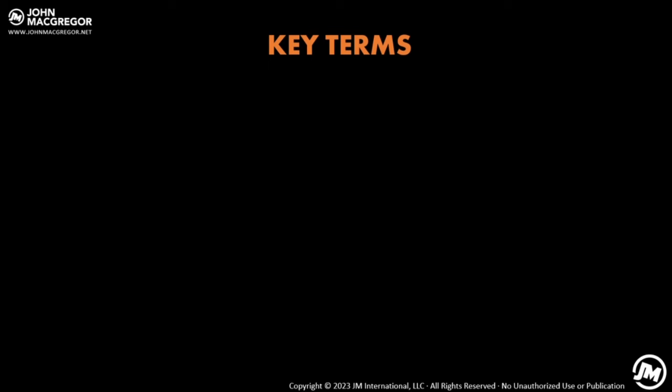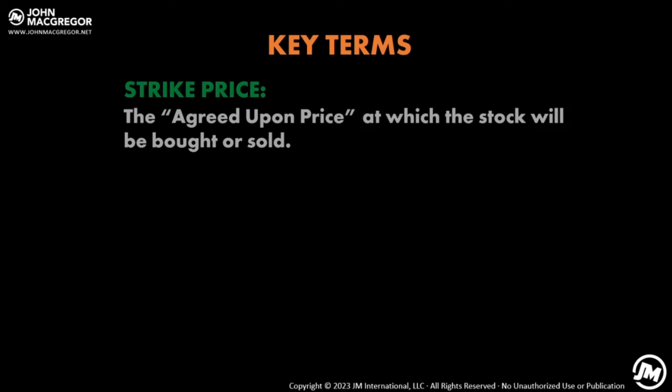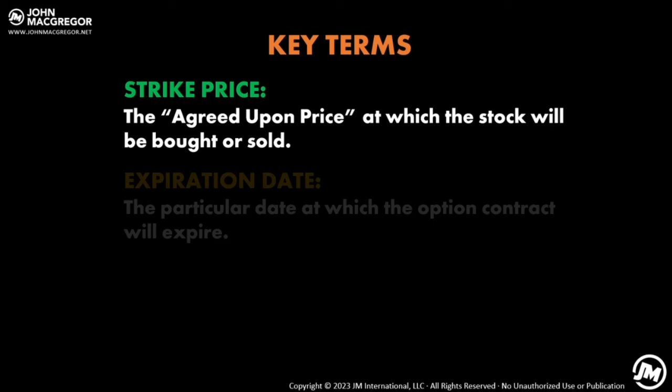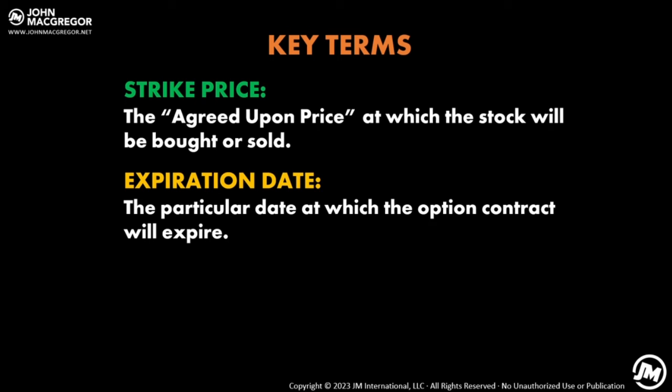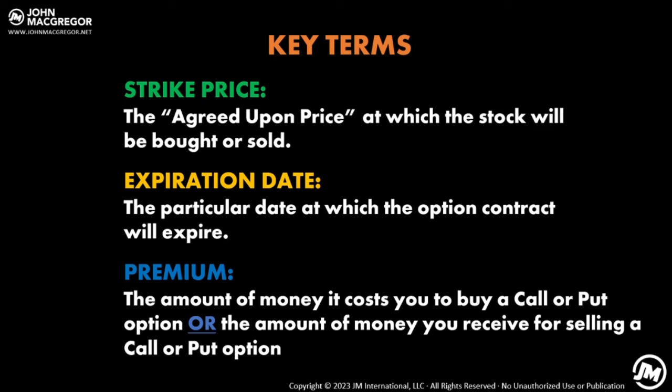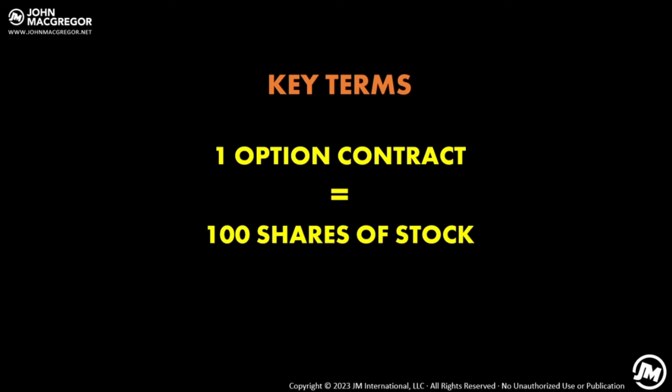The basis of my strategy is simply selling calls on stocks I own and selling puts on stocks I don't own. Let me explain some key terms. The strike price is the agreed-upon price at which the stock will be bought or sold. The expiration date is the date the option contract will expire. The premium is the amount of money it costs to buy a call or put, or the amount you receive for selling one. One option contract equals controlling 100 shares. Options expire on Friday.